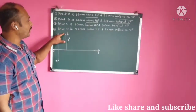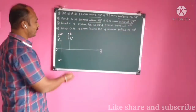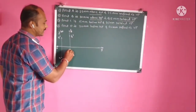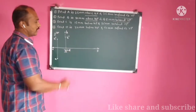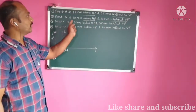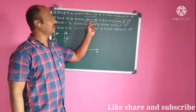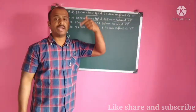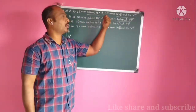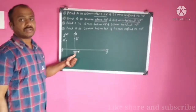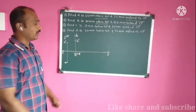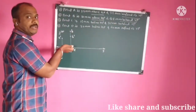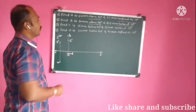This is the front view and this is the top view of point B, which lies in the second quadrant. Because the point lies above HP and behind VP, it lies in the second quadrant. In the second quadrant, both the front view and top view will be above the XY line.